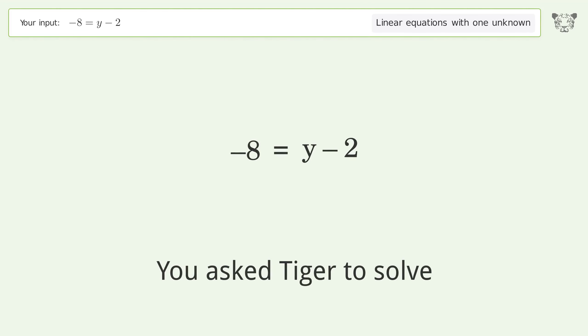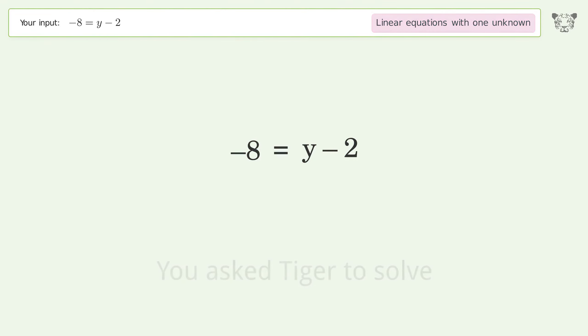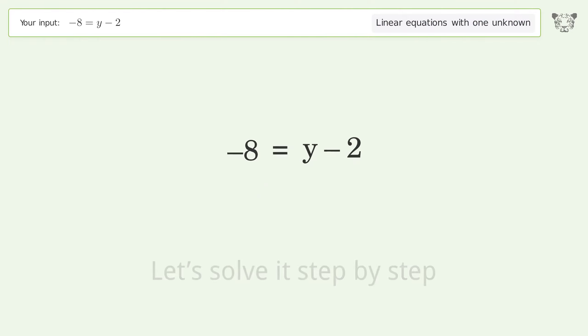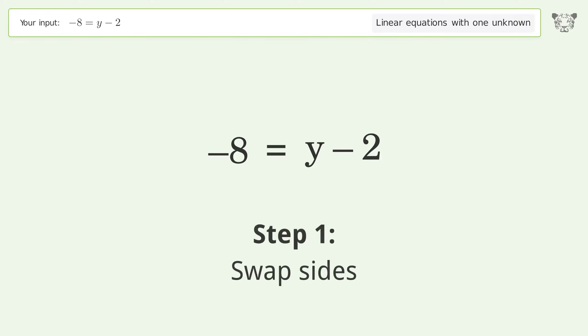You asked Tiger to solve this — it deals with linear equations with one unknown. The final result is y equals negative 6. Let's solve it step by step. Swap sides.